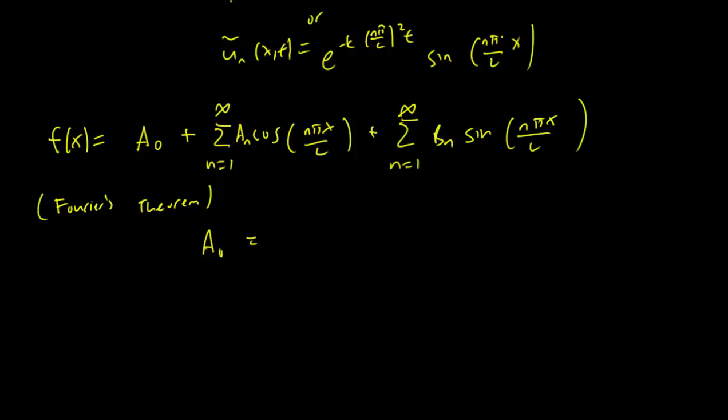So we have A₀ equals 1/(2L) integral from -L to L of f(x)dx, which is similar to what it was in the previous example.